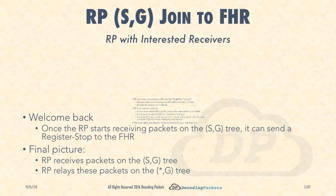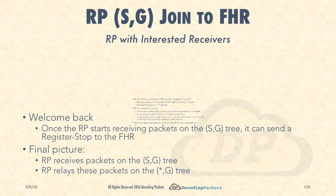Once the RP starts receiving packets on the S comma G tree — because the FHR added the receiving interface from the MHR into the OIL — it can now start sending multicast packets over the S comma G tree. The FHR is simultaneously encapsulating packets in the register tunnel and sending them down the S comma G tree. The RP will receive one copy via the S comma G tree and also via the encapsulated register message. Once the very first packet shows up on the S comma G tree, the RP can send a register stop to the FHR. The RP then receives packets on the S comma G tree and relays them on the star comma G tree — the source and receiver are now completely connected.